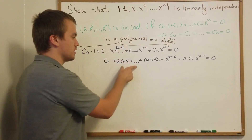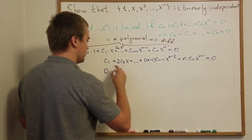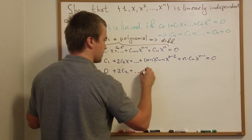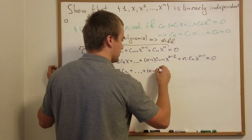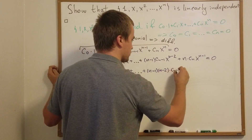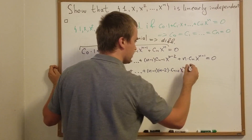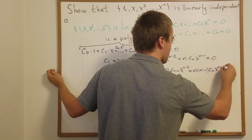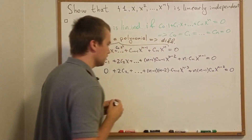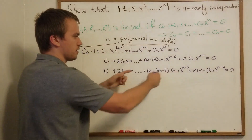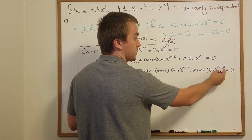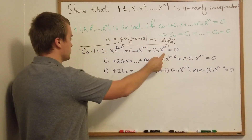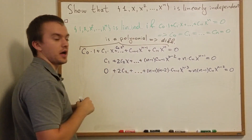So I can differentiate this equation again. We're going to get 0 plus 2c2, plus ... plus (n−1)(n−2)·c_{n−1}·x^{n−3}, plus n(n−1)·c_n·x^{n−2}, equals 0. Here we can see we've decreased the degree of our polynomial by 2. And since we have n+1 terms, we can repeat this step n times.